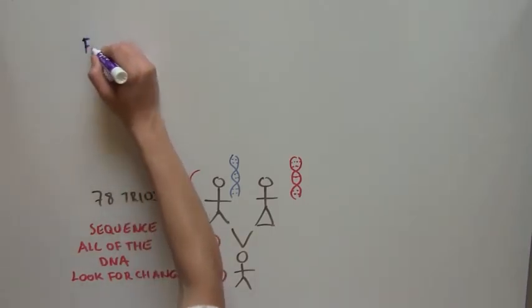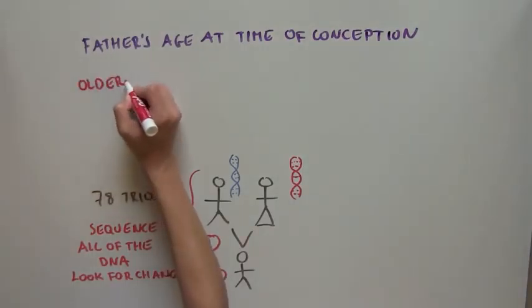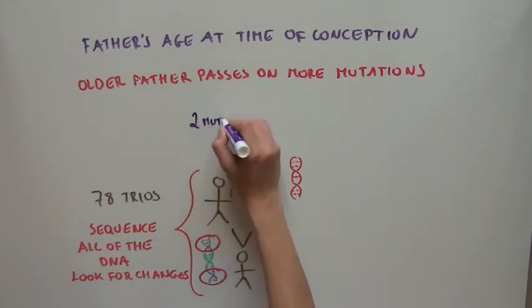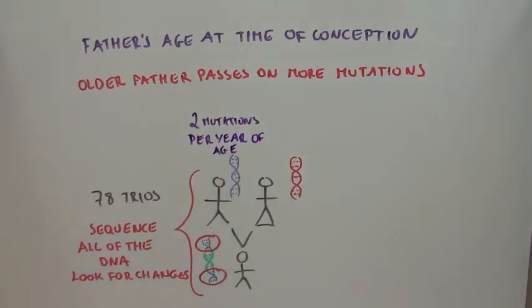When the scientists took into account fathers' age at the time of conception, they found that the older the father, the more mutations were passed on to the child. Two mutations were passed on to the child for every year of the fathers' age at the time of conception.